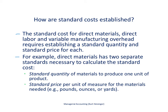How are standard costs established within an organization? We're going to focus on three different areas of production: direct materials, direct labor, and variable manufacturing overhead. Fixed manufacturing overhead is separate and described in a separate video. All three of these costs require establishing two items: a standard quantity and a standard price.